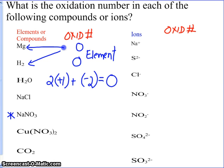Sodium ion: what's the charge of sodium? We did this already — sodium is plus one. There is only one sodium ion. Chloride ion is minus one. The sum of those equals zero.